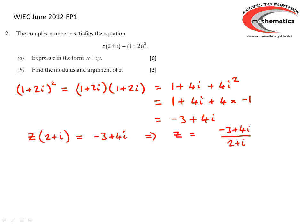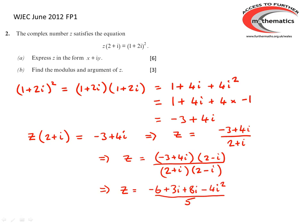So the equation can be rewritten as z times (2 plus i) equals minus 3 plus 4i, giving z equals (minus 3 plus 4i) divided by (2 plus i). To do a complex number division, we multiply the top and the bottom of the fraction by the complex conjugate of the denominator. So z equals (minus 3 plus 4i)(2 minus i) divided by (2 plus i)(2 minus i). The denominator gives us 2 squared minus i squared, which is 4 minus (minus 1), so that's 5.